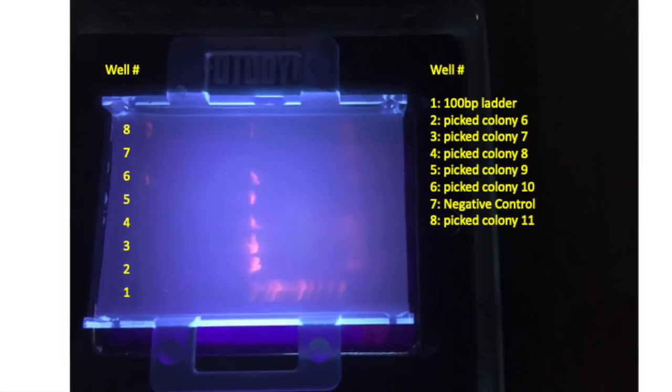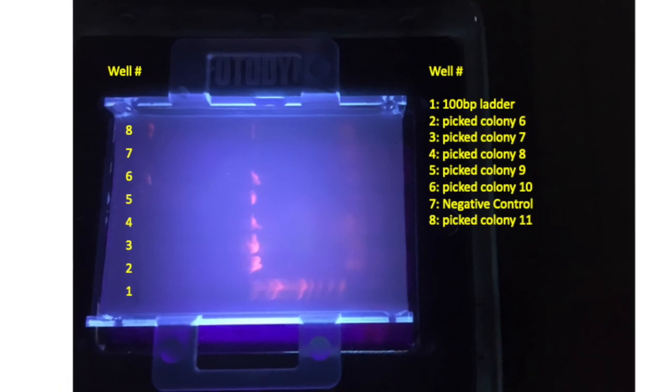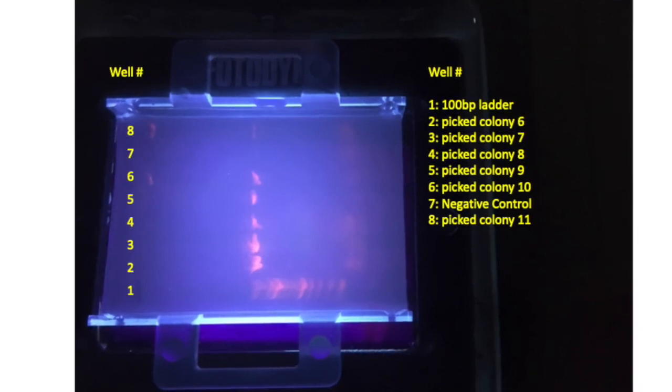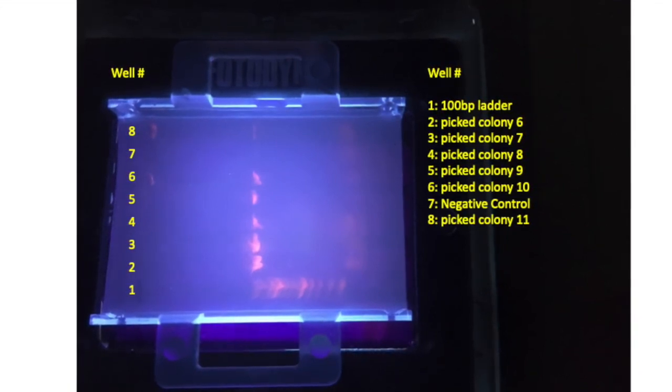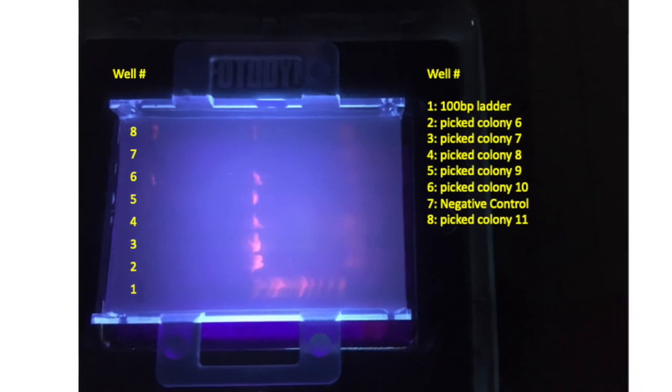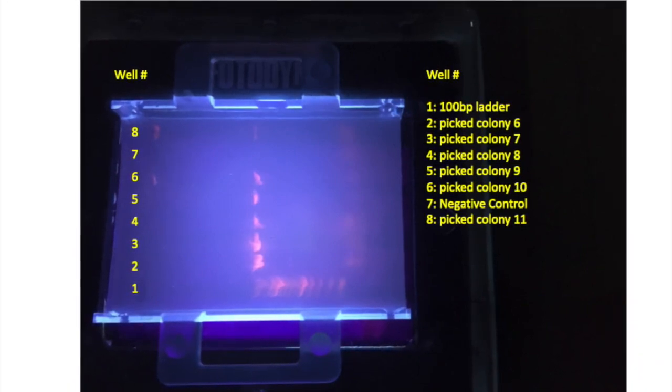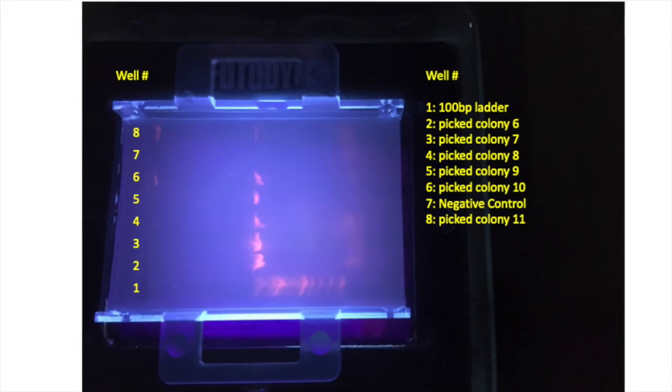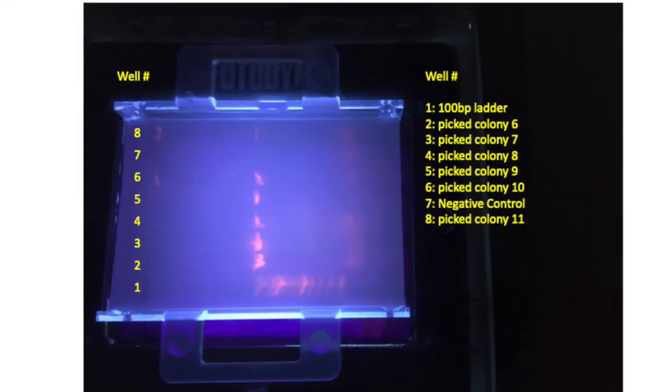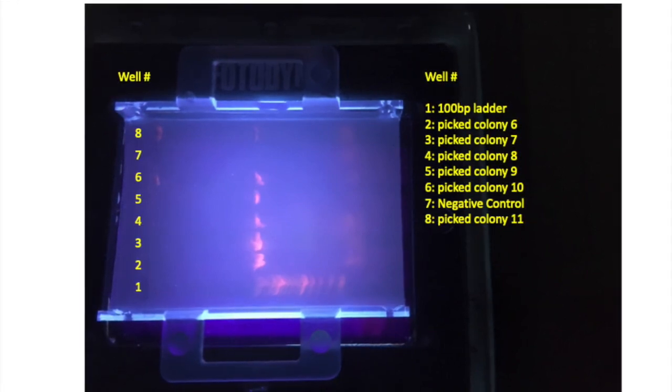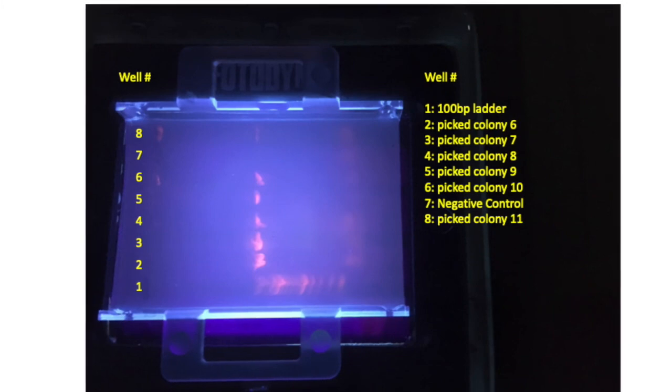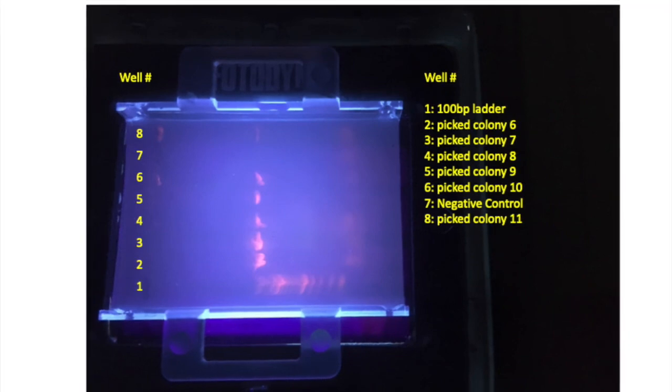And then those samples that were successfully amplified, make sure you provide your instructor with at least 10 microliters of your PCR sample in a very clearly marked sterile microfuge tube so that your instructor can prepare that sample to be sent for Sanger sequencing.